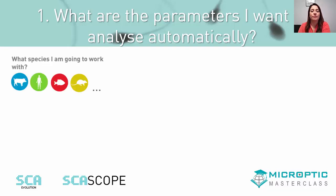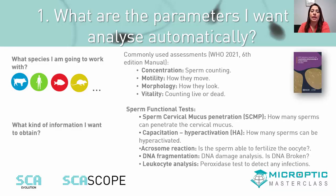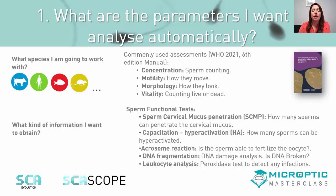What information do I want to obtain? For example, if I work in an animal production center, I may be interested in obtaining doses, so I would like to analyze motility, concentration, and maybe morphology. If I work at a university doing a specific study of the acrosome reaction in humans, or if I work in a human IVF center, I want to analyze parameters such as motility, concentration, morphology, and vitality. I should also consider additional tests such as cervical mucus penetration, hyperactivation, acrosome reaction to see if the sperm is able to fertilize, DNA fragmentation to check for DNA damage, and leukocyte analysis.